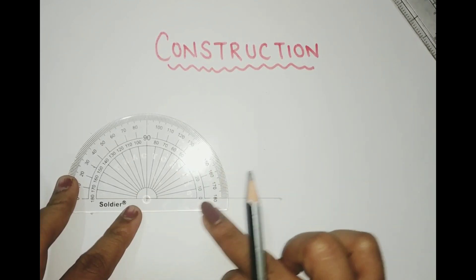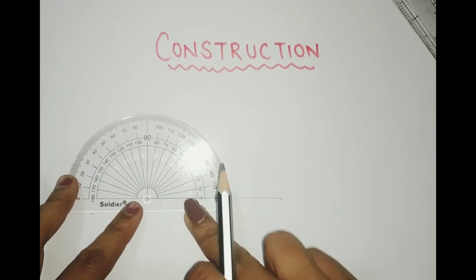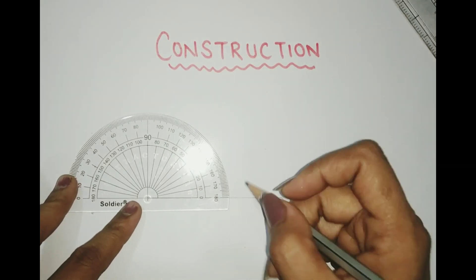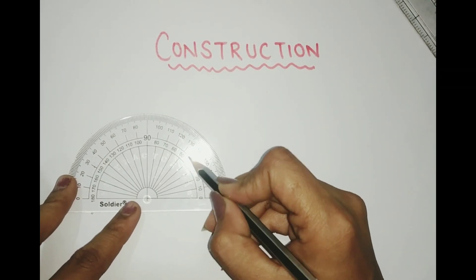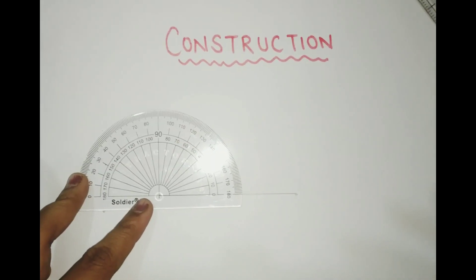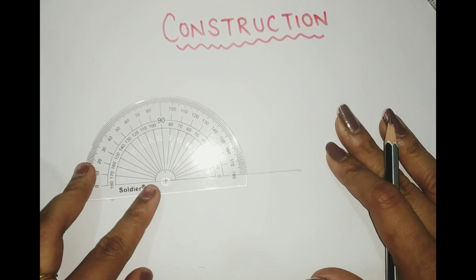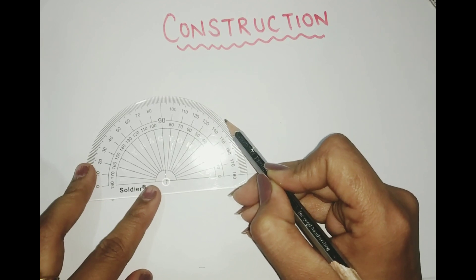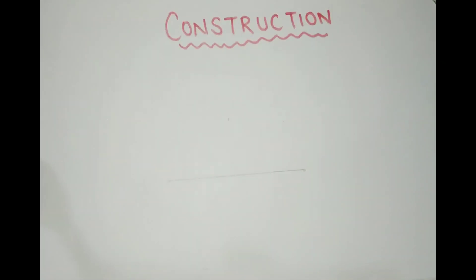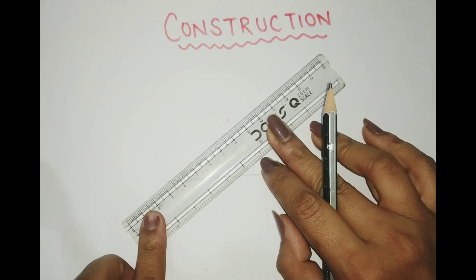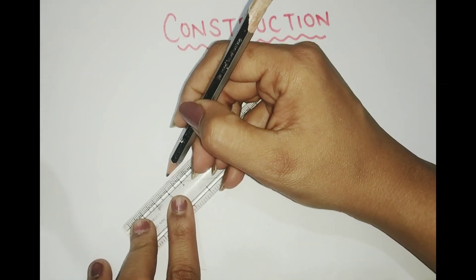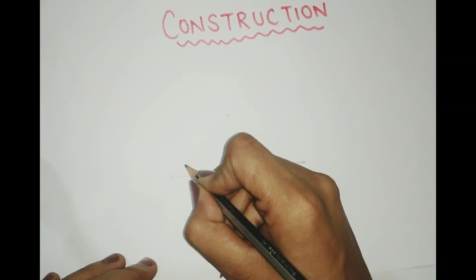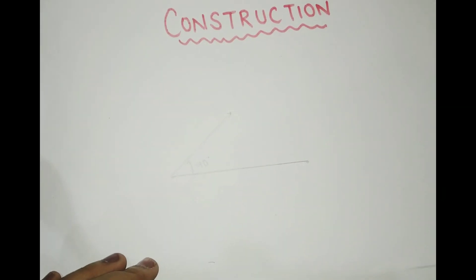I've placed the center exactly at the endpoint and made sure the protractor is exactly on the line. Now I need to show where 40 degrees is. As you can see, 40 is right here. Exactly at 40, you put a point. Then remove the protractor, take a scale, and join both points. That's all you have to do.